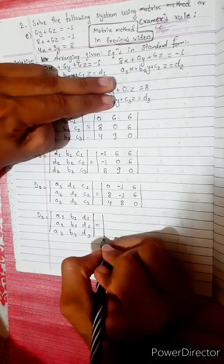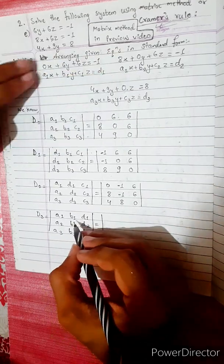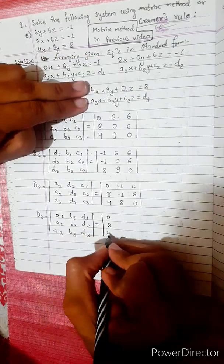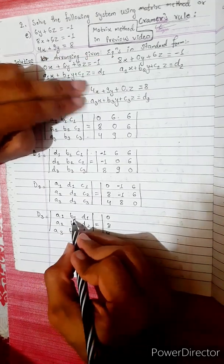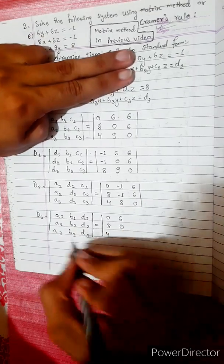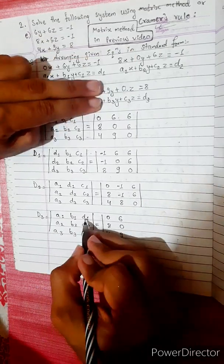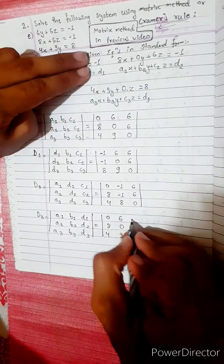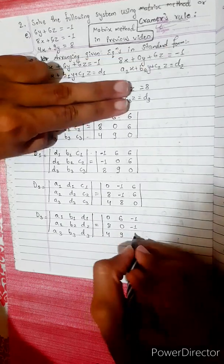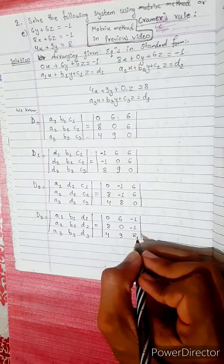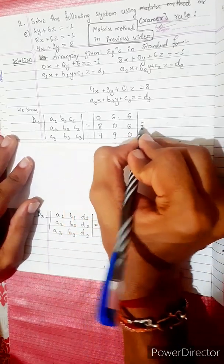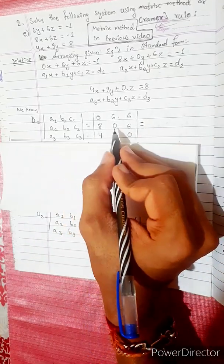For the constants: a1 is 0, a2 is 8, a3 is 0. B1 is 6, b2 is 0, b3 is 9. D1 is negative 1, d2 is negative 1, d3 is 8. Now we have the determinant of this 3x3 matrix and we use this formula.